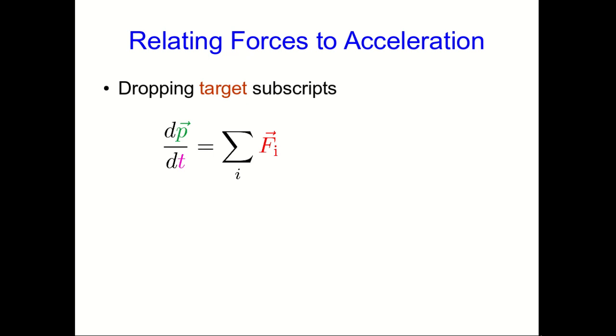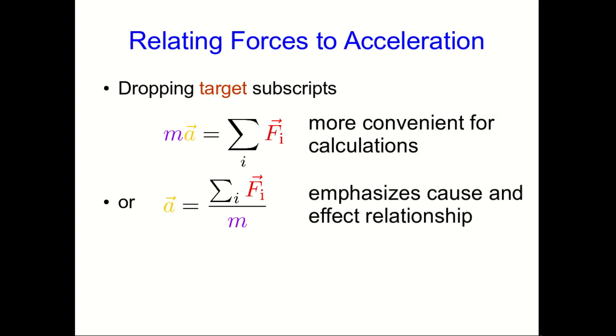So we have this rate of change of momentum is the vector sum of forces on the object, and that momentum of course is just an inertia times a velocity. We're going to work with situations where the inertia is constant so we can pull it out in front of the derivative. Well we know what dv/dt is—that's an acceleration—and this is now the form of this equation that you're probably familiar with.